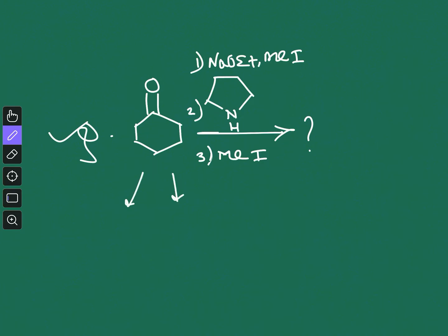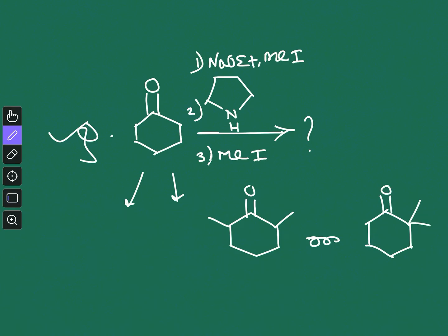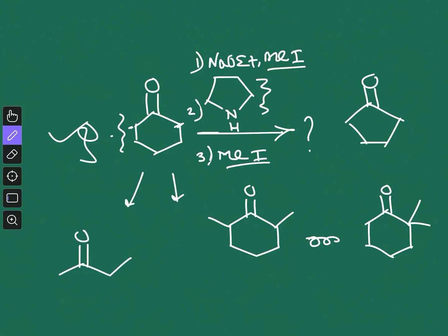From this particular reaction, two products are possible — either this one or this one. There are two steps of methylation, and both methylations can occur on the same carbon or on different carbons. This question may be framed in different ways using different amines for enamine formation, and a series of ketones may be used. In this case we used a six-membered ketone, but they can give you a five-membered ketone or an unsymmetrical ketone. The main concept is based on how the enamine will form.